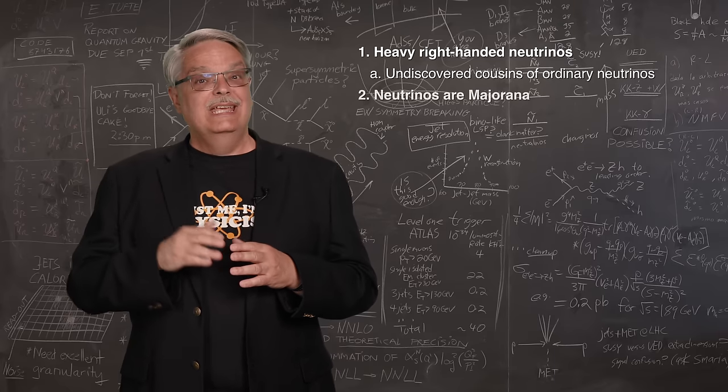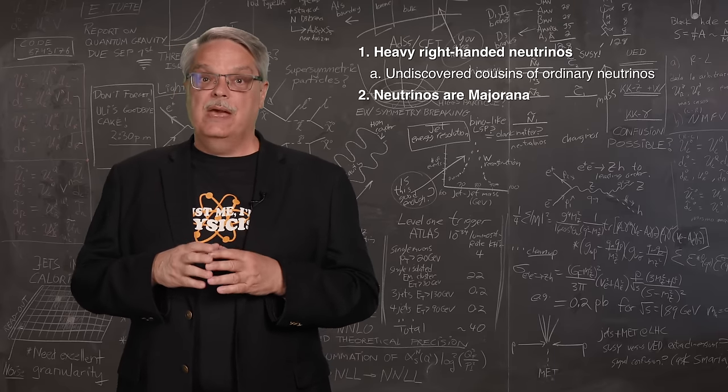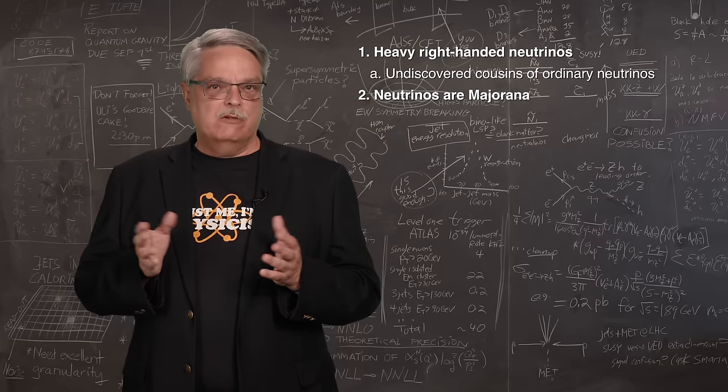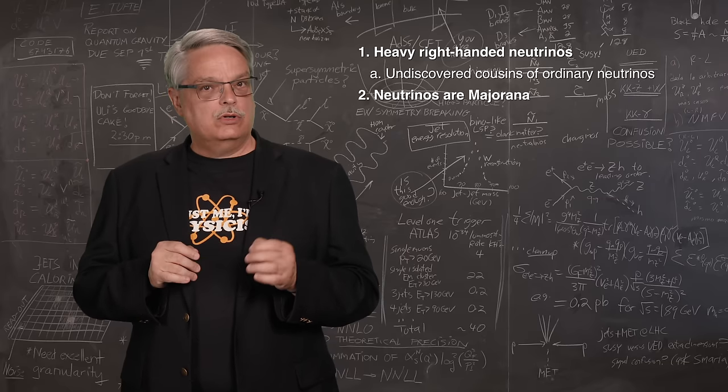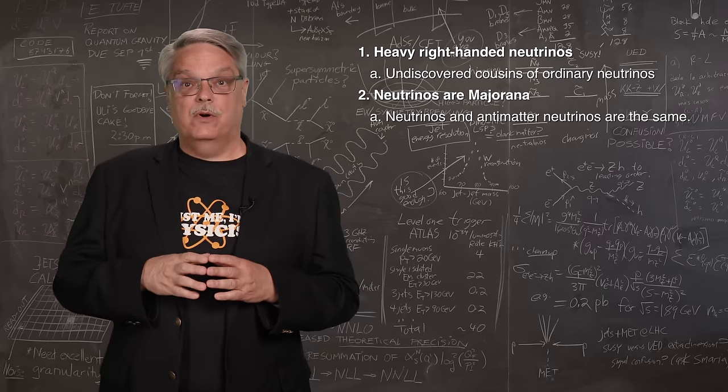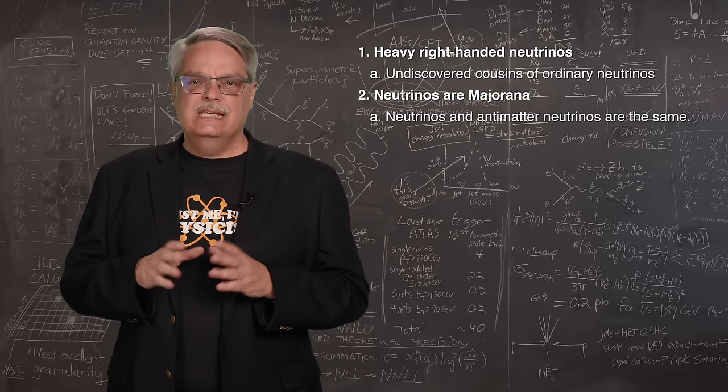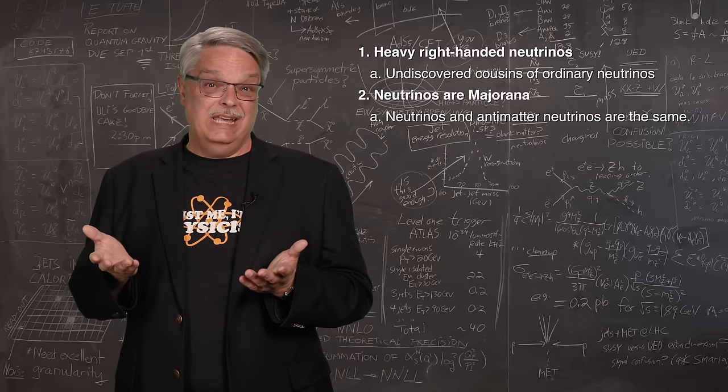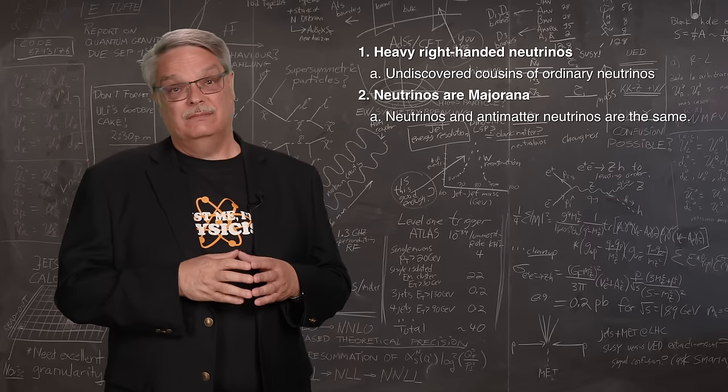The second component is that matter neutrinos and antimatter neutrinos are the same particle. The technical term is Majorana neutrinos, named after Ettore Majorana, who wrote about particles that were their own antimatter particles. This idea sounds kind of weird, but it might be true. We still don't know if the familiar neutrinos and antineutrinos are the same particle or not.